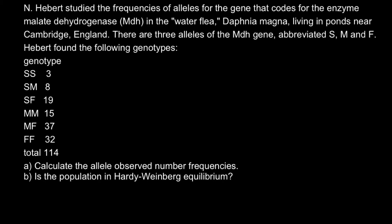So how do we find the frequencies of the alleles? Let's study the genotypes that are present here. We have the S allele, and the total number of alleles would be three, with six genotypes. In the SS homozygous genotype, we have three individuals. That means three individuals would have six alleles, so we have six S alleles in this genotype.